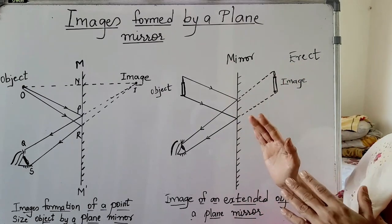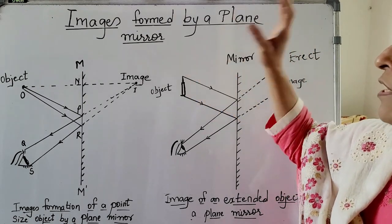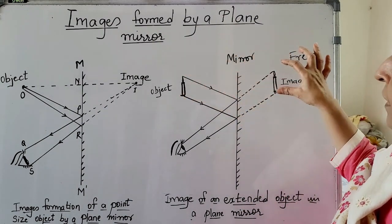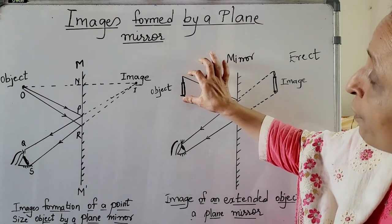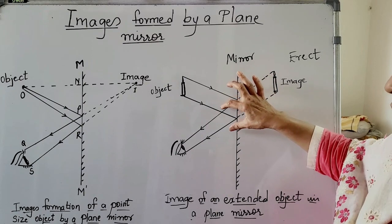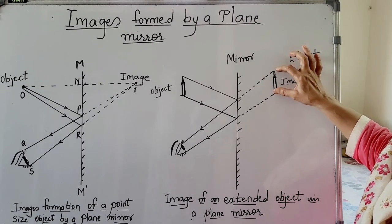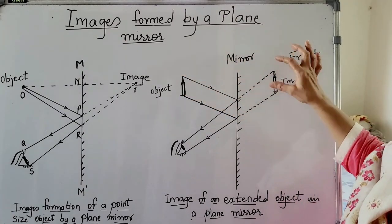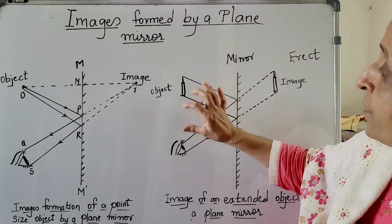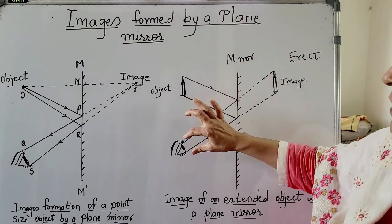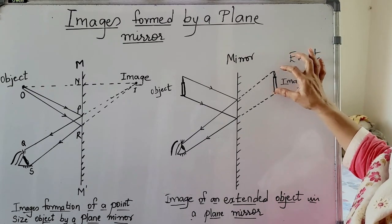The same way it happens for an extended object also. This candle is the extended source — the extended object. Now you have to see how this image is formed in the plane mirror. The candle gives out two rays which are incident rays; they get reflected, and when you draw the reflected rays, the image of this candle is formed here. The image is exactly the same, and therefore it is known as an erect image. The incident ray gets reflected and when you draw the reflected rays backward, you can see this image at the same distance.